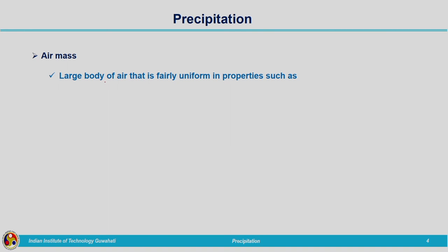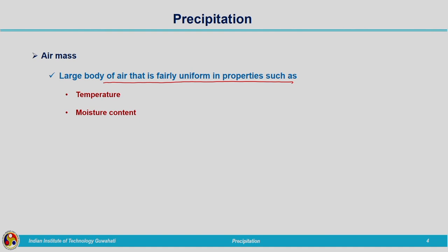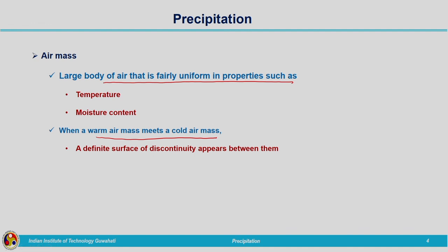Now let us see how precipitation is occurring. Before that we need to have an understanding about air mass. Air mass is a large body of air that is fairly uniform in properties — that is water vapour properties — it may be temperature, moisture content, or vapour pressure. When a warm air mass meets a cold air mass, a definite discontinuity or boundary is found between them. That definite surface of discontinuity appearing between the warm air mass and cold air mass is known as a front.